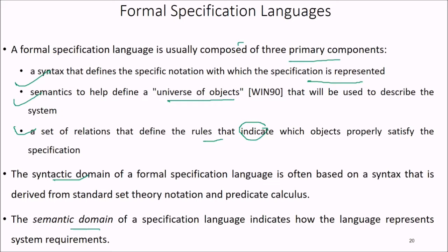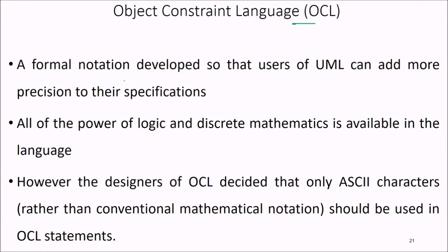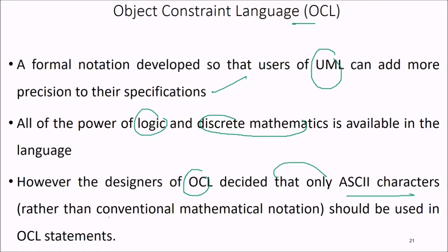The syntactic domain of a formal specification language is often based on syntax derived from standard set theory notation or predicate calculus. The semantic domain indicates how the language represents system requirements. OCL (Object Constraint Language) is a formal notation developed so that UML users can add more precision to their specifications. All the power of logic and discrete mathematics is available in OCL; however, the designers of OCL decided that only ASCII characters — rather than conventional mathematical notation — should be used in OCL statements.